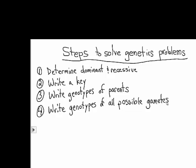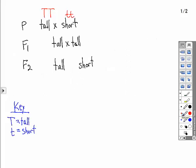The next step in solving a genetics problem is to write the genotypes of all possible gametes from those parents. In this case, the tall plant can only make one kind of gamete. Imagine that this one is the female, so it can only make one kind of egg, a big T.